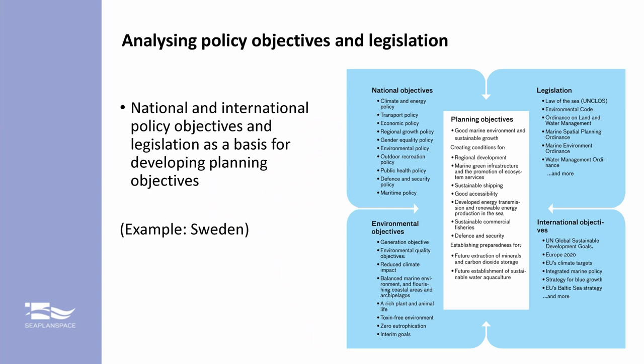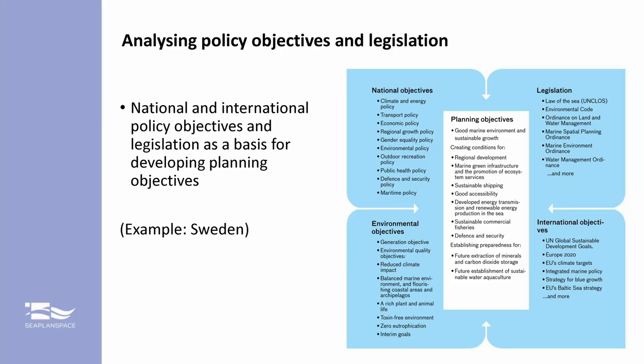Another tool is to analyze policy objectives and legislation more specifically, still during that first initial phase of MSP when you're trying to build that picture of what's going on and also what room for manoeuvre you actually have as a planner — because of national objectives already set and also existing legislation. That legislation has probably predated MSP; it exists and needs to be taken into account, as do international and environmental objectives. This example from Sweden, from the current status report of 2014, shows a systematic way of analyzing national and international policy objectives and legislation as a basis for considering planning objectives.